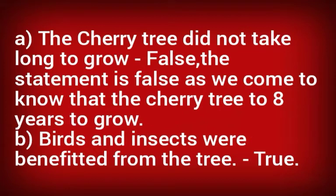The very first statement is that the cherry tree did not take long to grow — this is a false statement. As we come to know from the very first line, it says that eight years have passed since I placed my cherry seed in the grass. That means the cherry tree took eight years to grow.